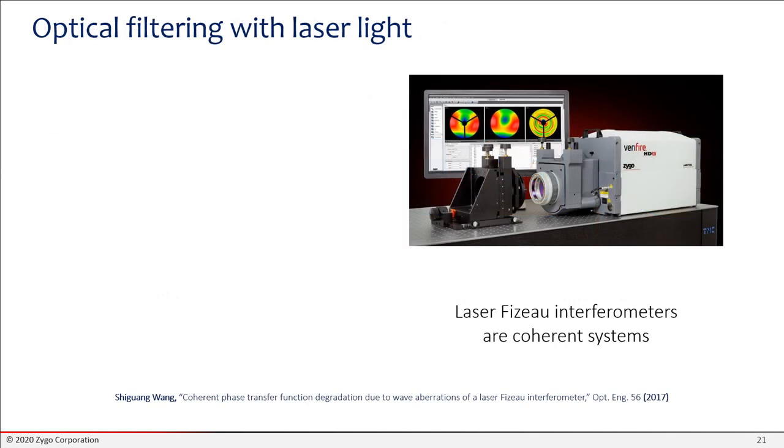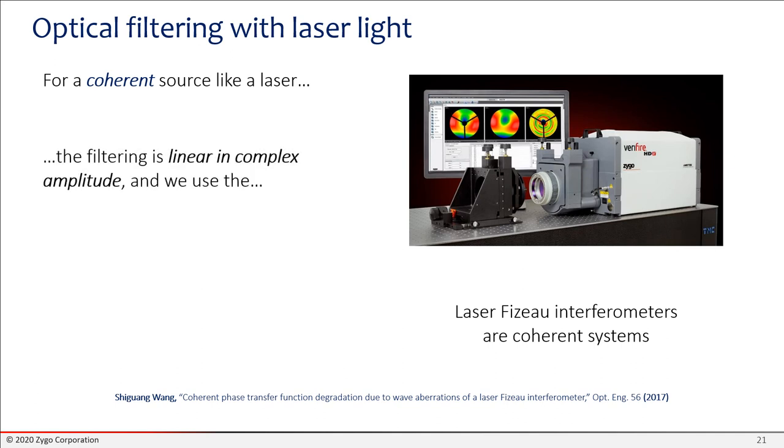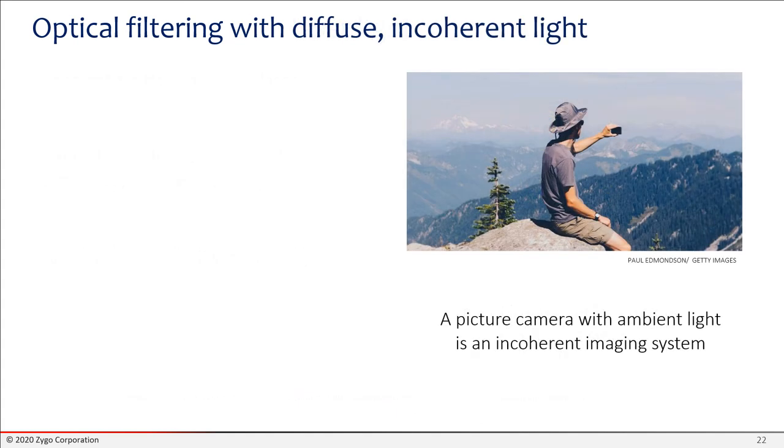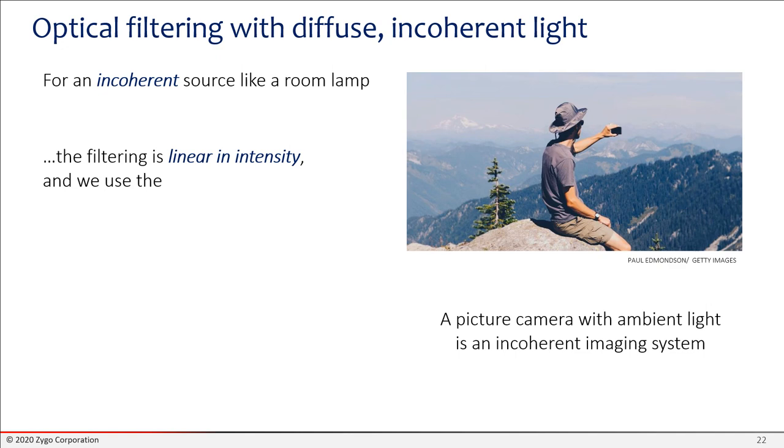The kind of transfer function that we use to characterize the optical filtering properties of the instrument depends strongly on the light source and the illumination geometry. If you've got a laser-based interferometer, then the light is fully coherent and the filtering is linear in the complex amplitude. So we use the amplitude transfer function. If, on the other hand, the light source is incoherent, the light's coming from pretty much everywhere, like in the situation where you've got a picture camera and you've got ambient light from all around, or maybe it's a room lamp, that incoherent light source means that the filtering will be linear in intensity as opposed to complex amplitude. And for that, we use the optical transfer function.